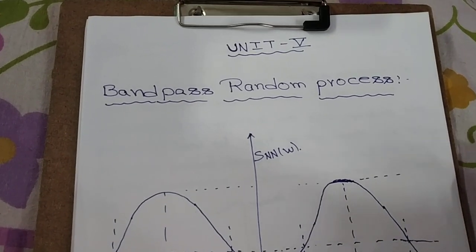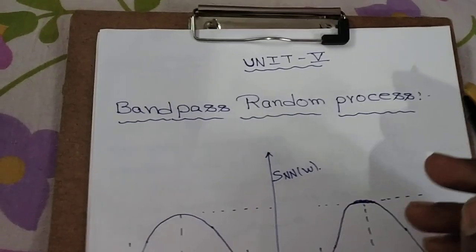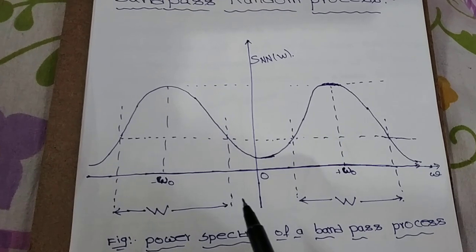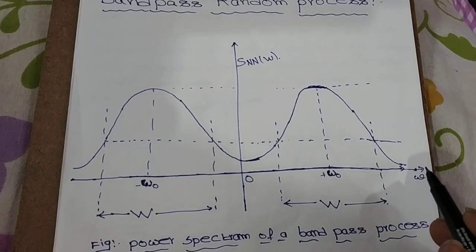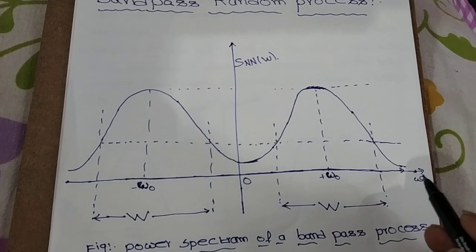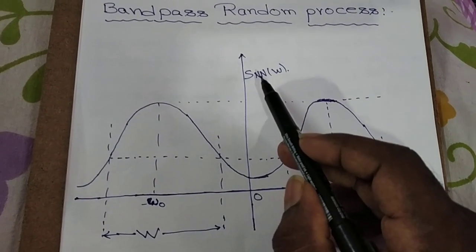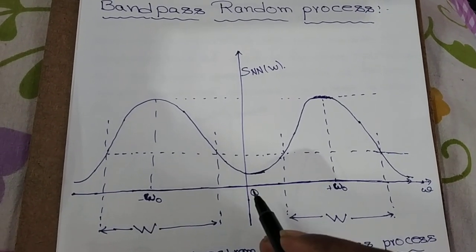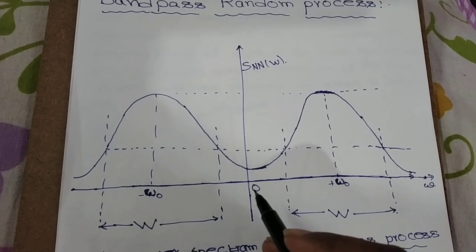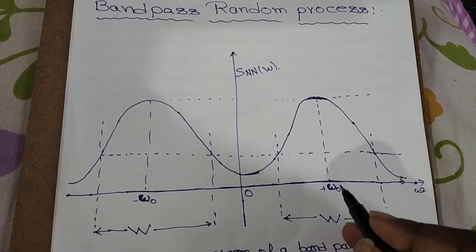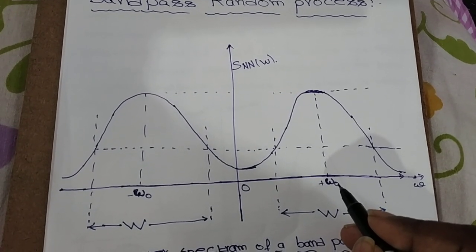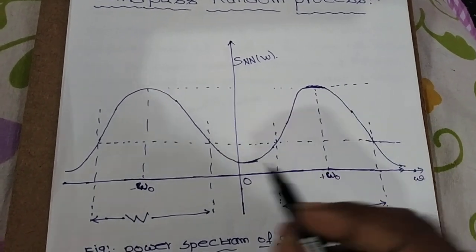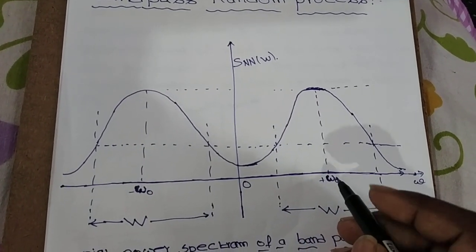Hi everyone, Unit 5, PTSP. Today's topic: band pass random process. This is the frequency spectrum for band pass random process. In the x-axis is omega and the power density spectrum S double N of omega is in the y-axis. Omega naught here is where omega equals zero. Omega naught is the band central frequency.